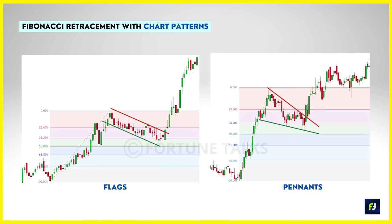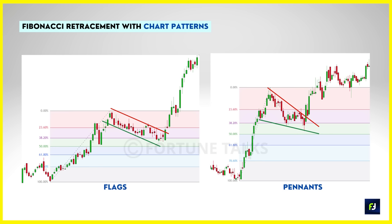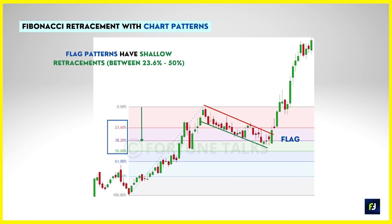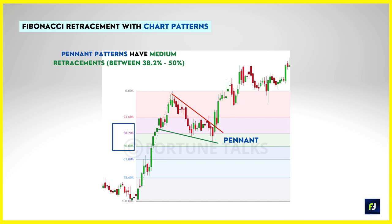The last method is using Fibonacci retracements in conjunction with chart patterns like pennants, flags, and wedges. Chart patterns like flags usually have narrow retracements, typically between 23.6% and 38.2%, while patterns like pennants have much deeper retracements between 38.2% and 50%. The trade entry, stop loss, and targets will be based on the pattern itself and not really on the Fibonacci tool.